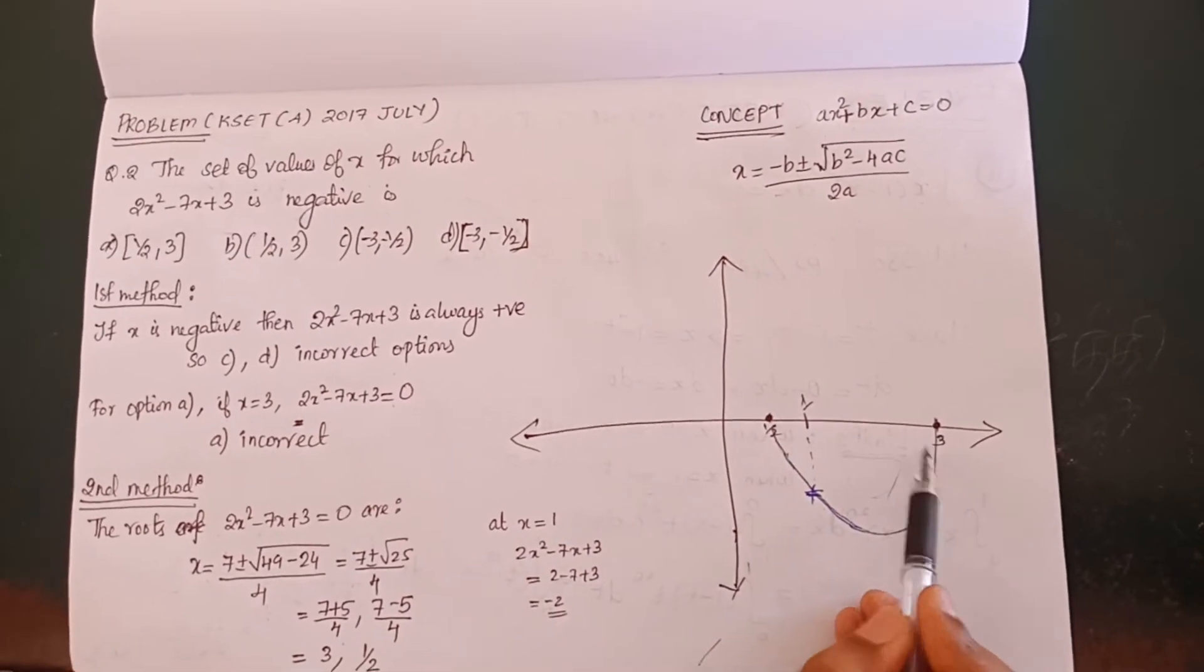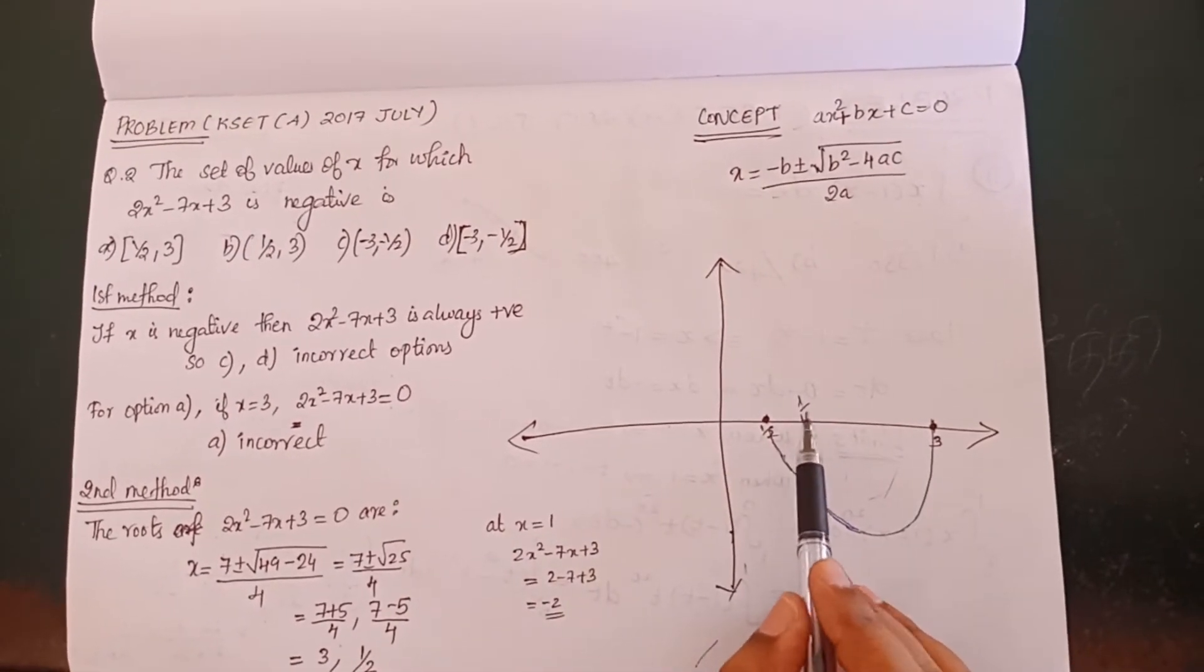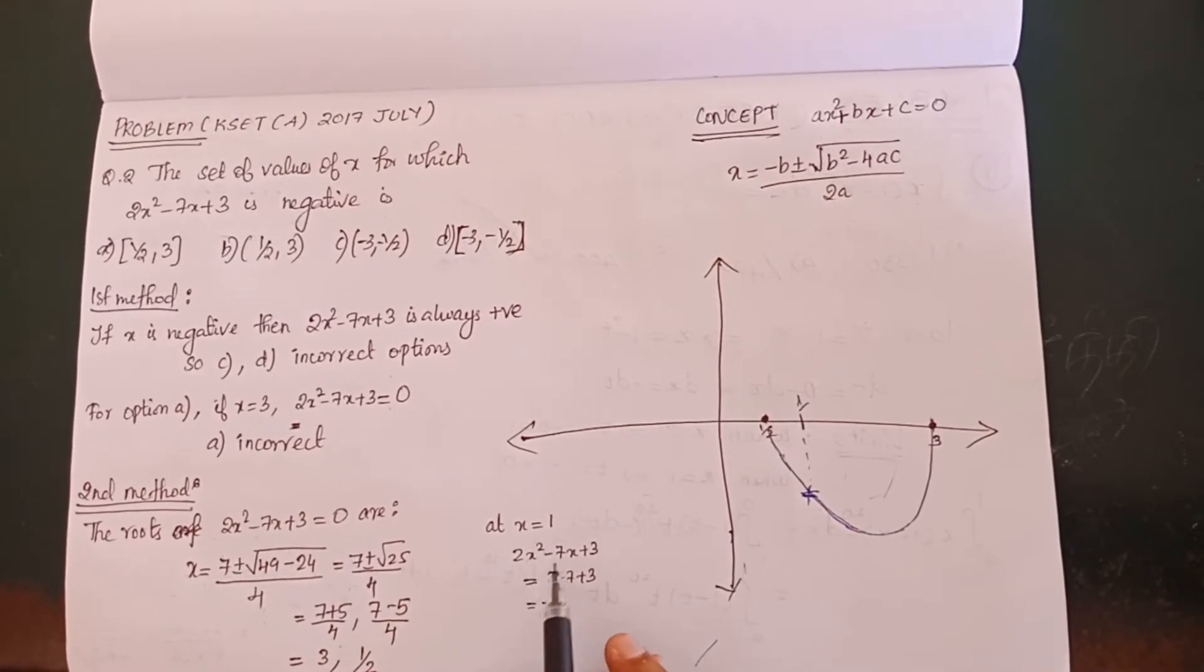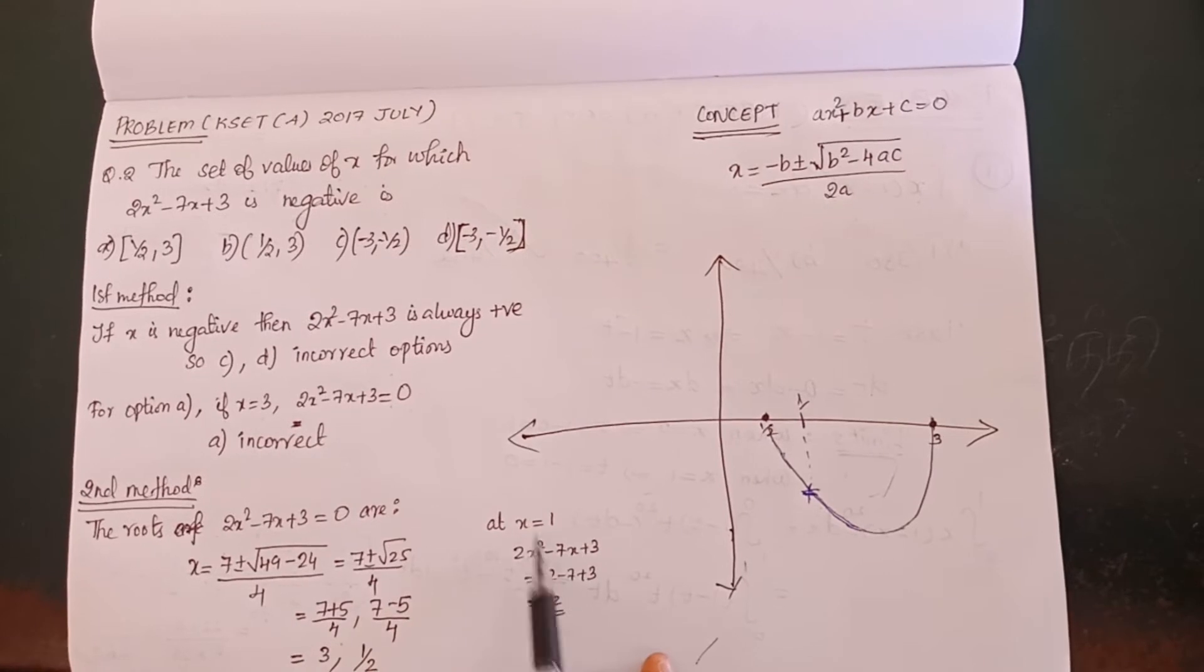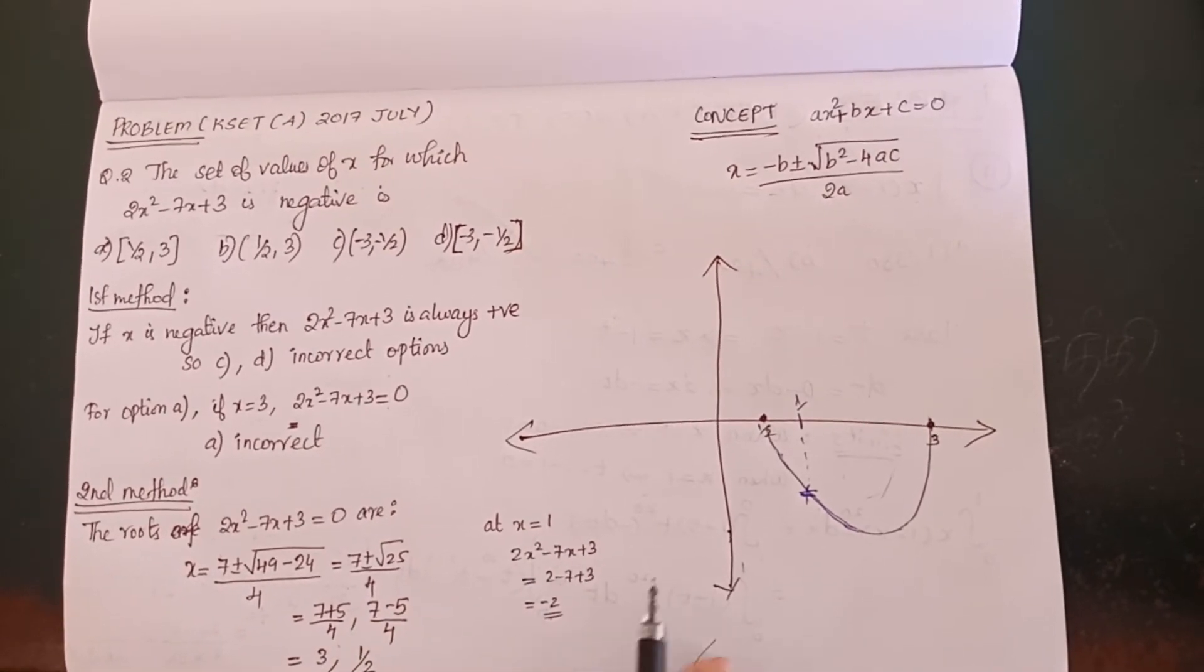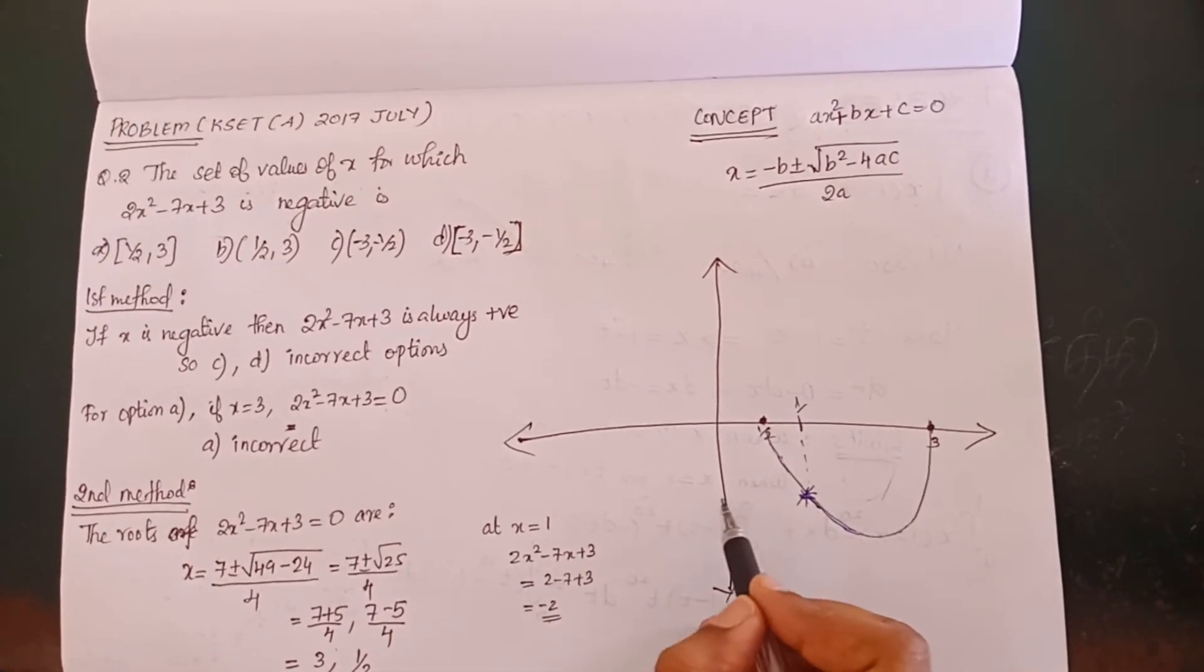This is the point. If we got the value, so 2x² minus 7x plus 3, it gives 1/2. It's this here, it's the point.